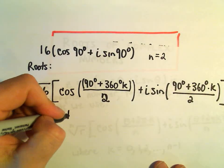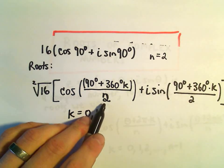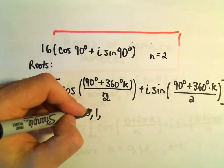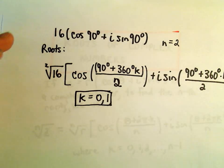And again, k in this case, it goes from 0, 1, up to n minus 1. Well, n minus 1 would be 2 minus 1, or again, just we would go from k equals 0 and k equals 1.